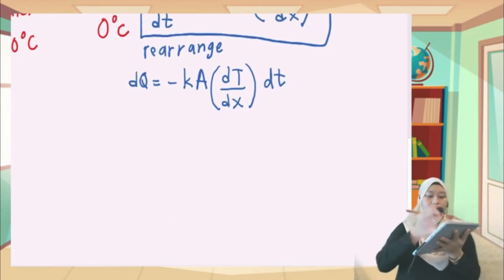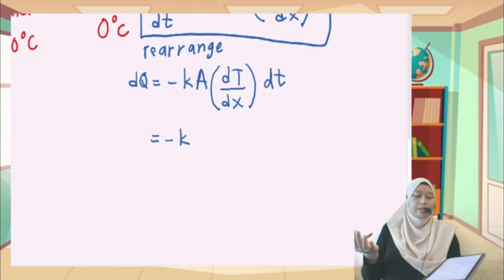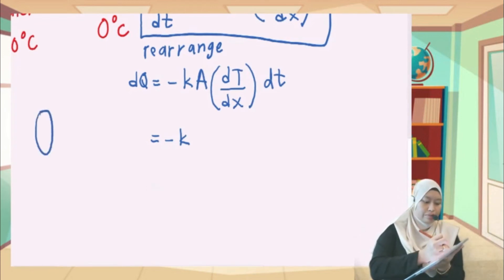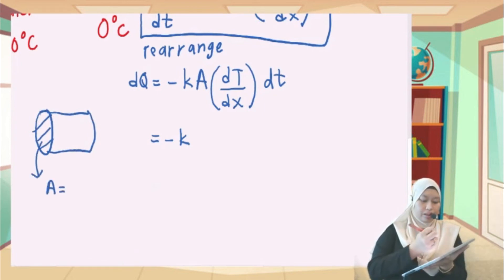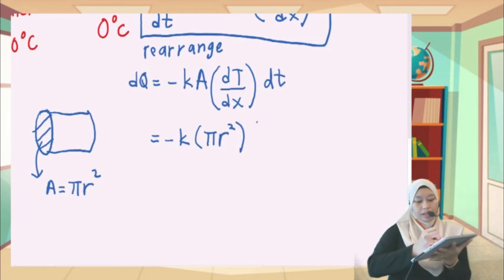So now we know K because we already got K as 205. But A for area, we need to find the cross-sectional area. The cross-sectional area for the circle is pi r squared. So use the formula pi r squared to find the area. And DT is basically T2 minus T1.